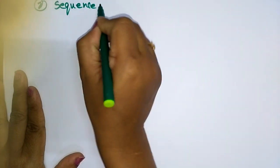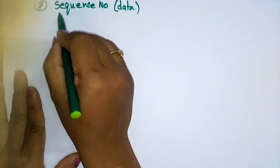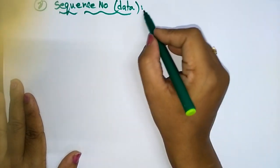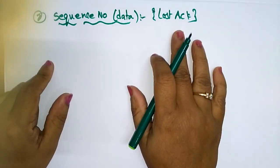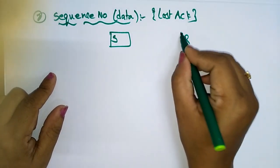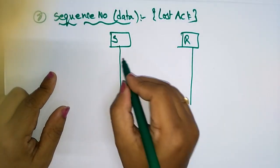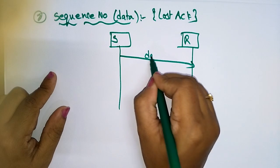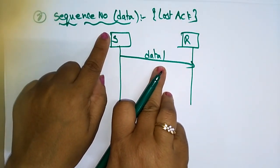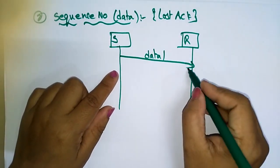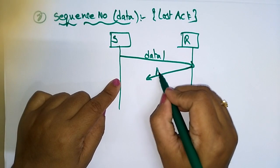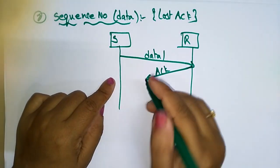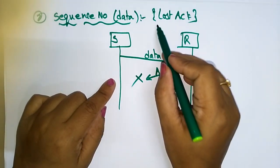Next, why do we give a sequence number for the data? Sequence numbers for data handle lost acknowledgement. Suppose there is a lost acknowledgement: the sender is there and the receiver is there. The sender sends data 1 with a sequence number. The receiver receives data 1, consumes it, and sends an acknowledgement back to the sender. But before reaching the sender, the acknowledgement is lost — that is a lost acknowledgement.